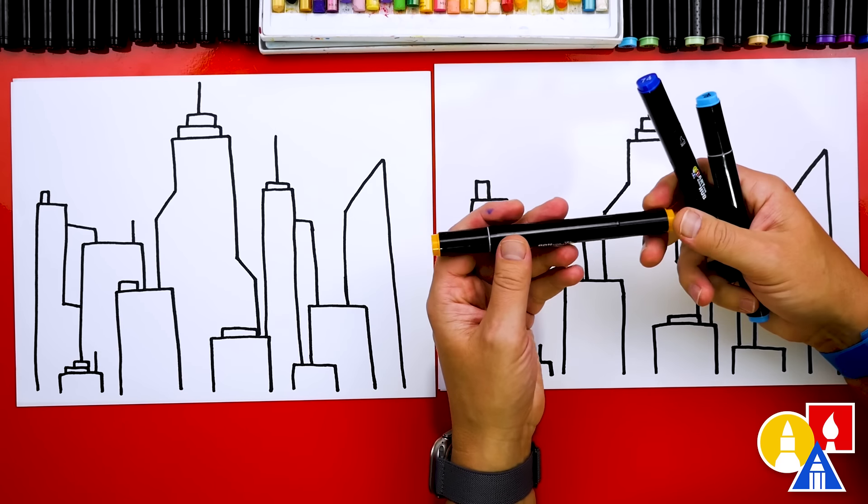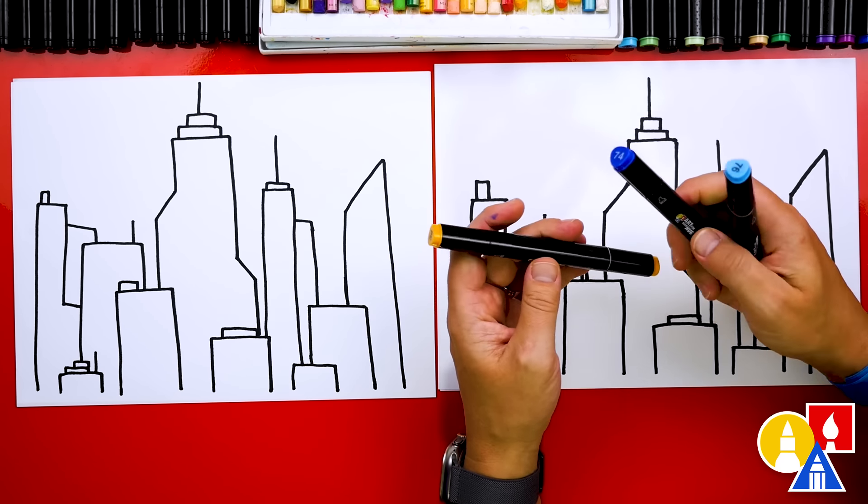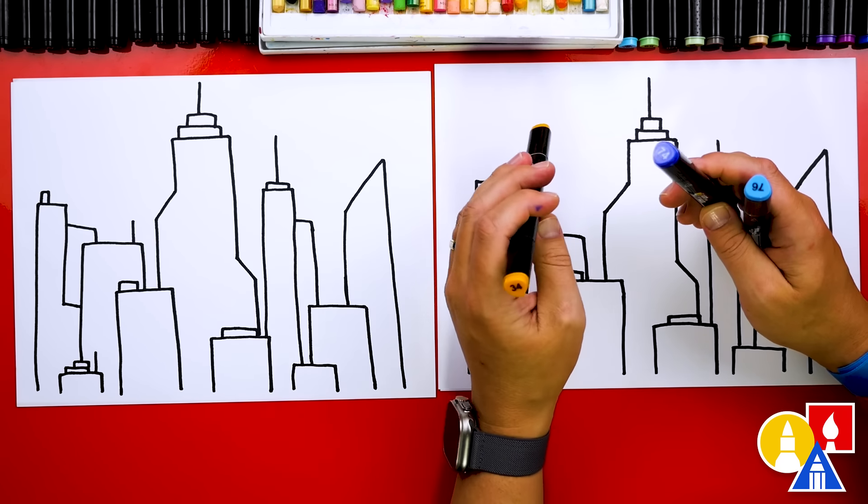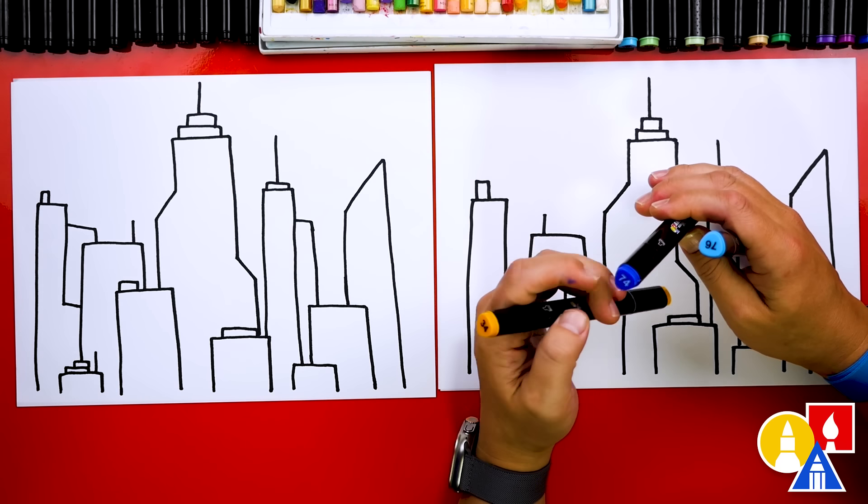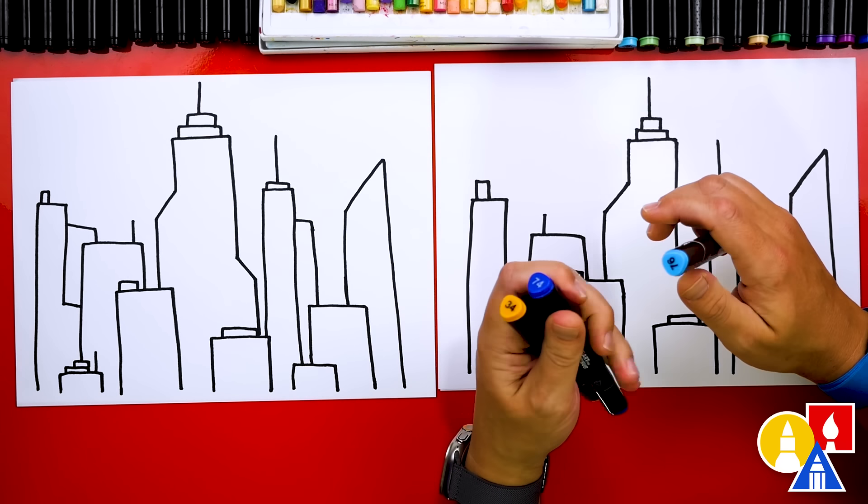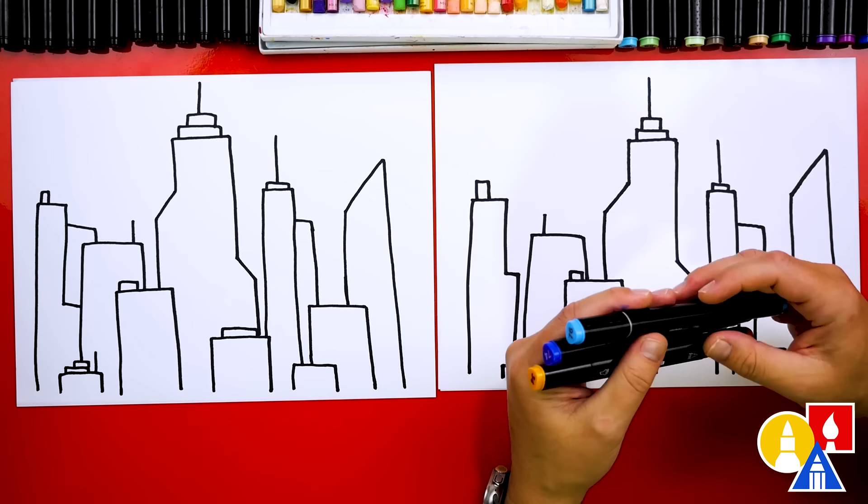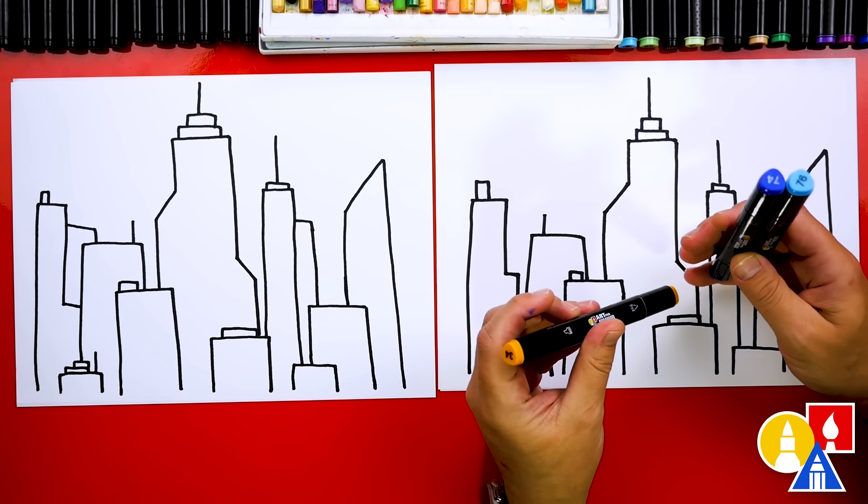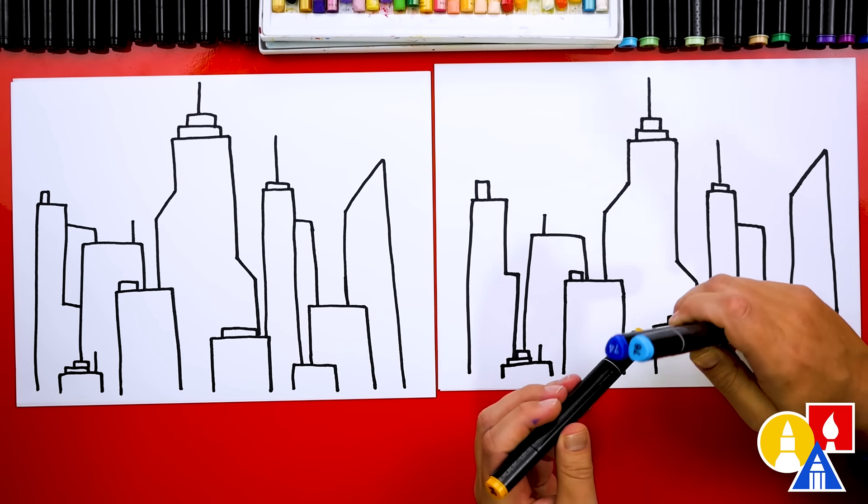We're using our Art for Kids Hub markers. If you have the same set and want to use the same colors, the first three that we picked out are 34 orange, 74 blue, it's a dark blue, and then 76 is a lighter blue. But also remember you don't have to use the same supplies and you can even change the colors any way you want.